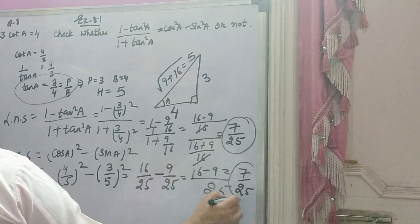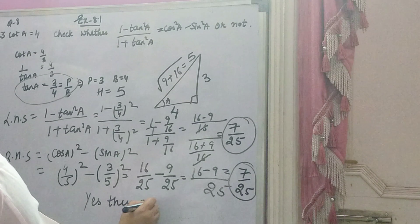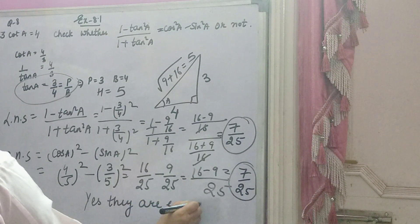Dekho, idhar bhi 7 over 25 aaghe. Idhar bhi 7 over 25 aaghe. Tau likho gi, yes, they are equal.